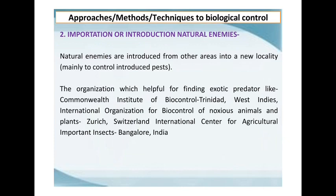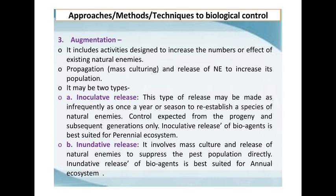The second approach is importation or introduction of natural enemies — where natural enemies are introduced from other areas into a new locality mainly to control introduced pests. National and international institutes help find predators and parasitoids for controlling incipient populations in that particular area. The third and most important method is augmentation, which includes activities designed to increase the number or effect of existing natural enemies by propagation or mass culture and release of natural enemies to increase their population.